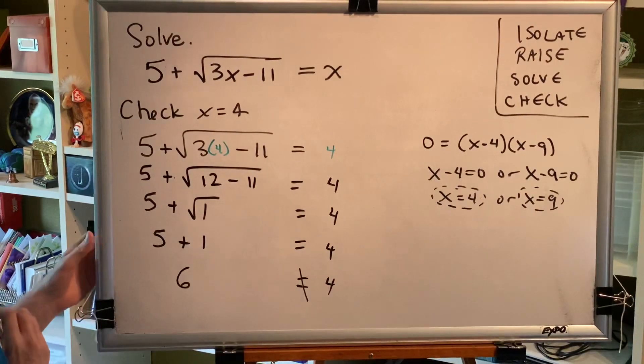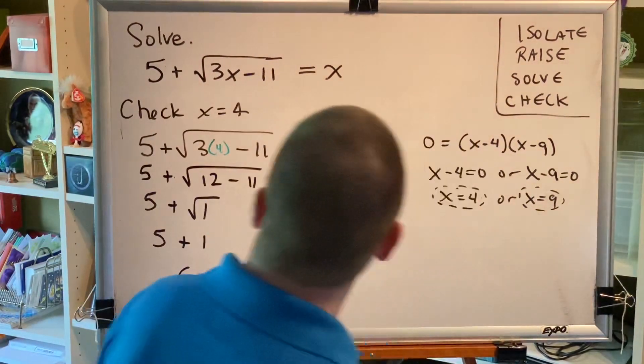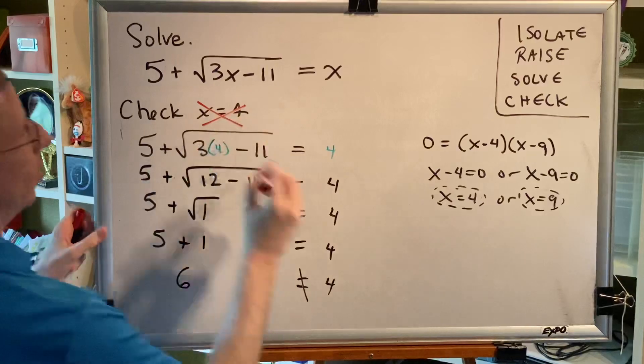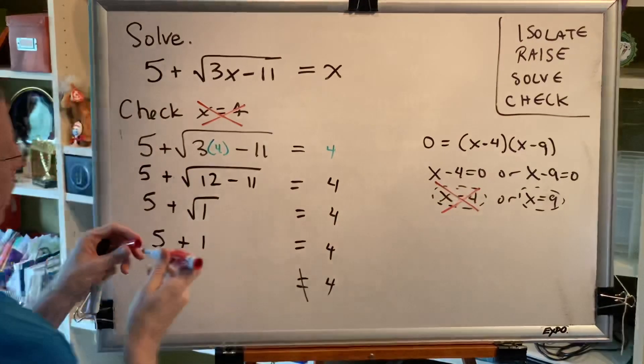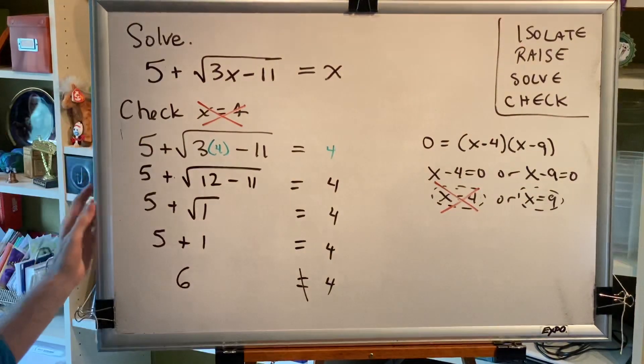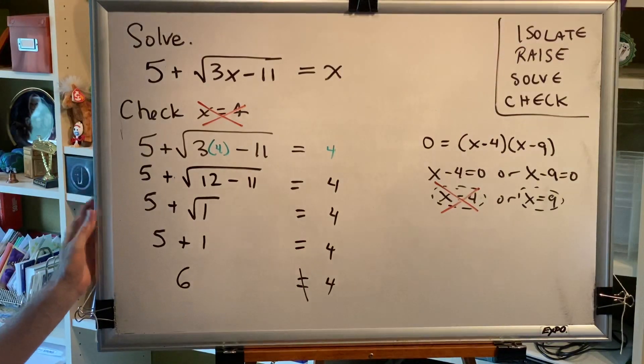No. Therefore, x equals 4 is an extraneous solution. It cannot be a solution of this equation because it does not make the left side match the right side.